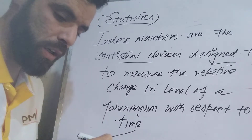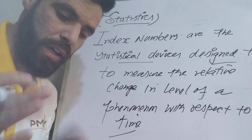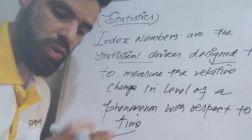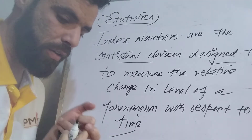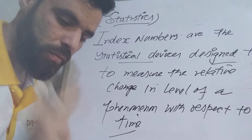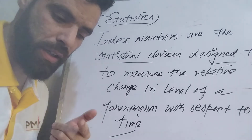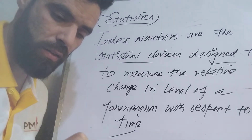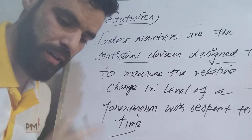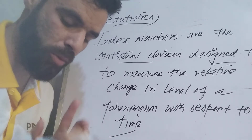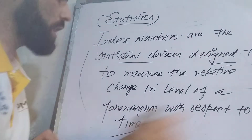In other words, we can say that an index number is a specialized type of rates, ratios, and percentages which give the general level of magnitude of a group of distinct but related variables in two or more situations.